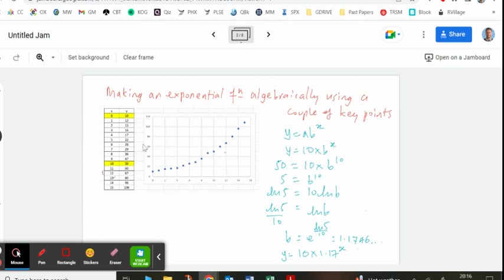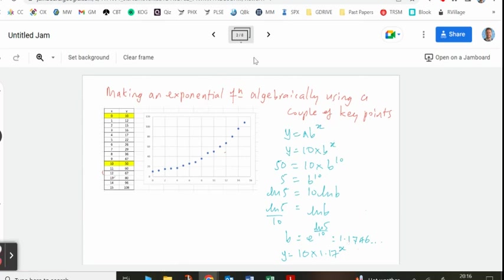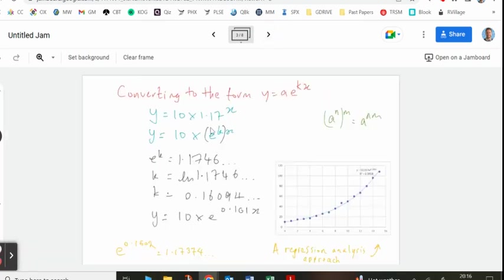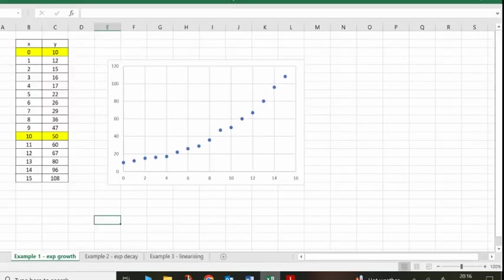We've got some sample data and creating an exponential model there algebraically, and then linking that to the form y equals ae to the kx. Also looking at a regression analysis on Excel, then I've got a couple more examples on Excel as well.